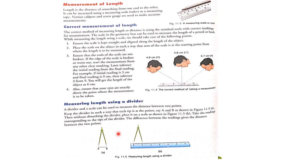Measuring length using a divider. A divider and a scale can be used to measure the distance between two points. Keep the divider so that each tip is at a point — say points A and B as shown in figure 11.5a. Then, without disturbing the divider, place it on a scale as shown in figure 11.5b, and take the reading corresponding to the tips. The difference between the readings gives the distance between the two points.